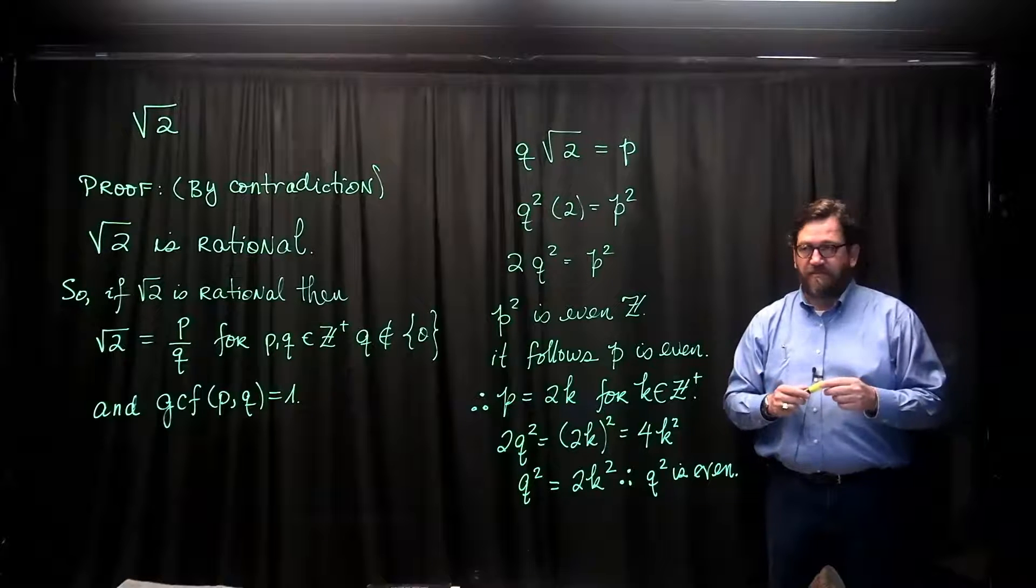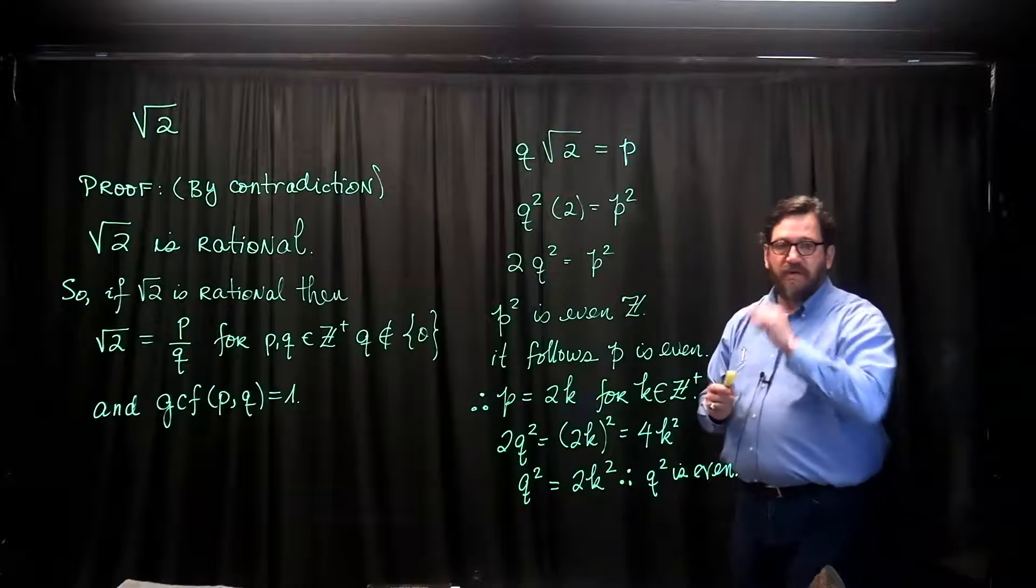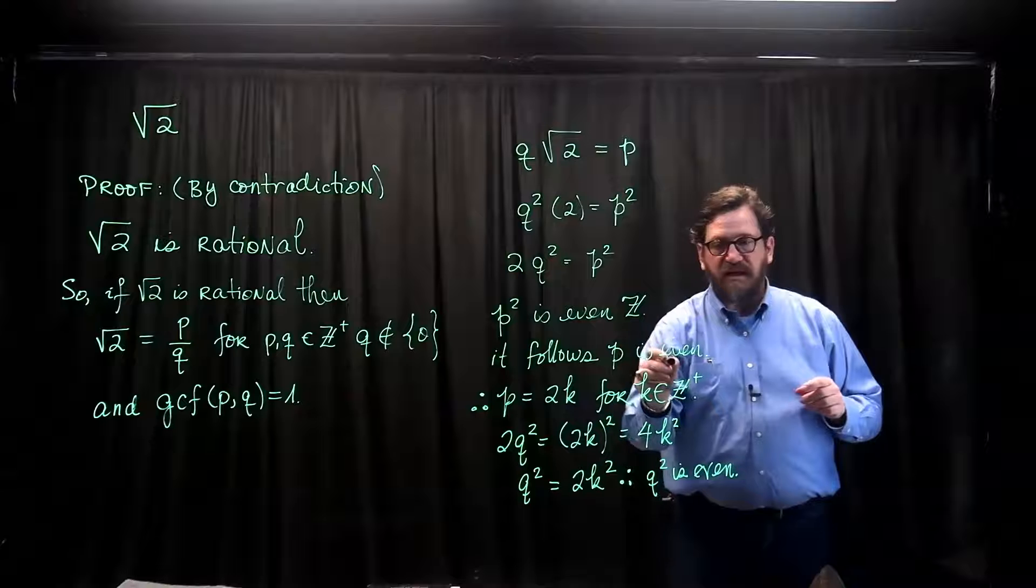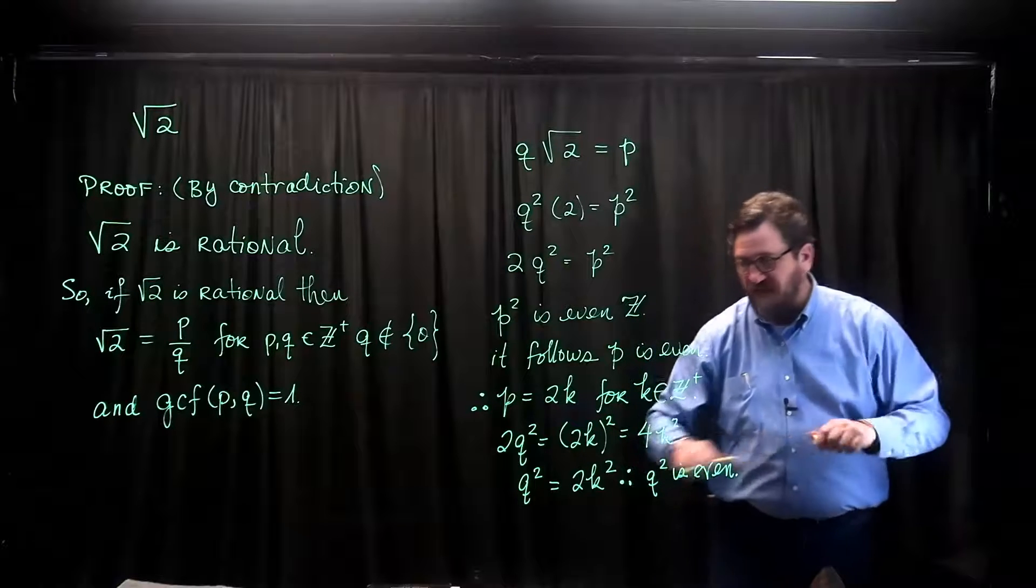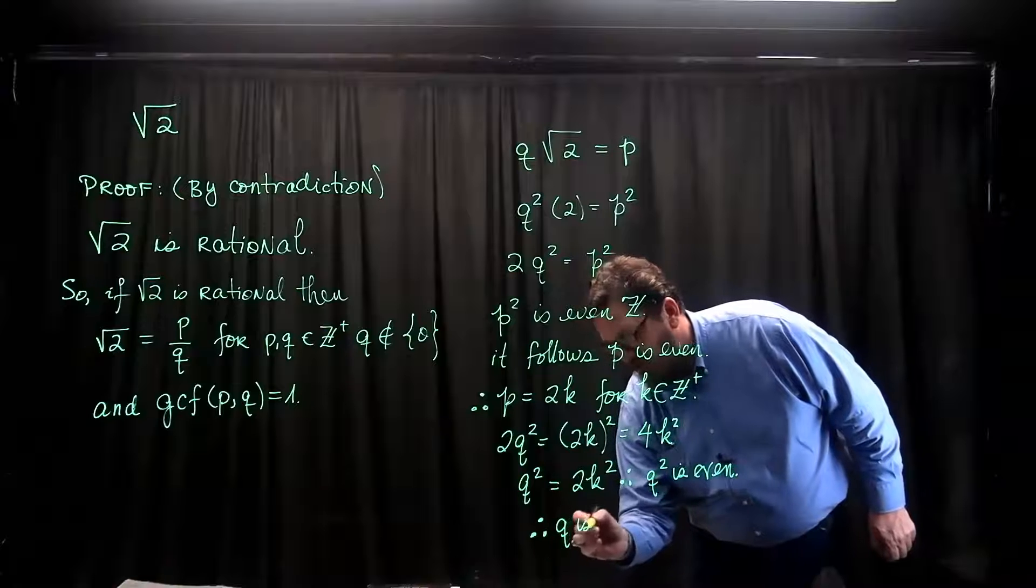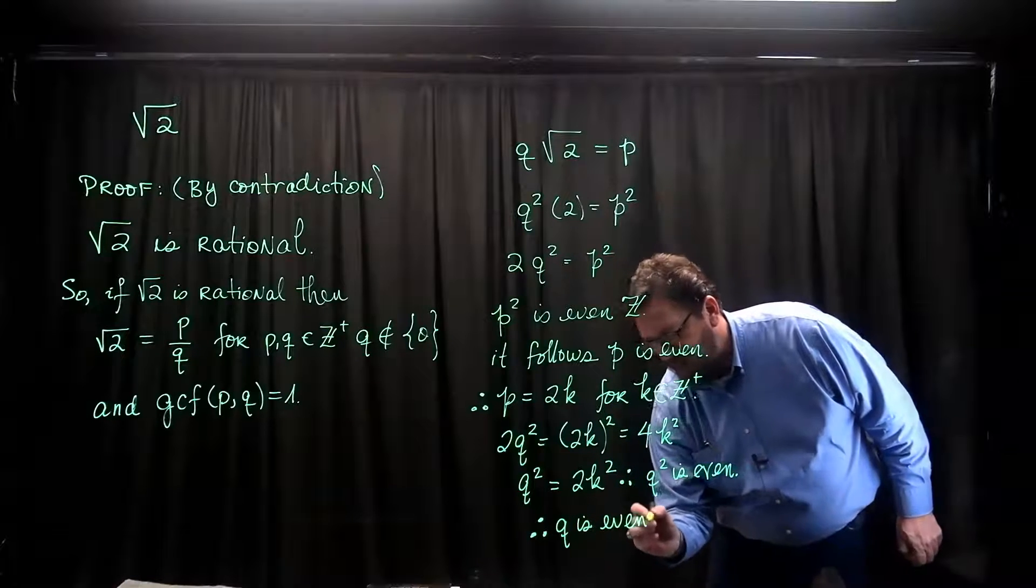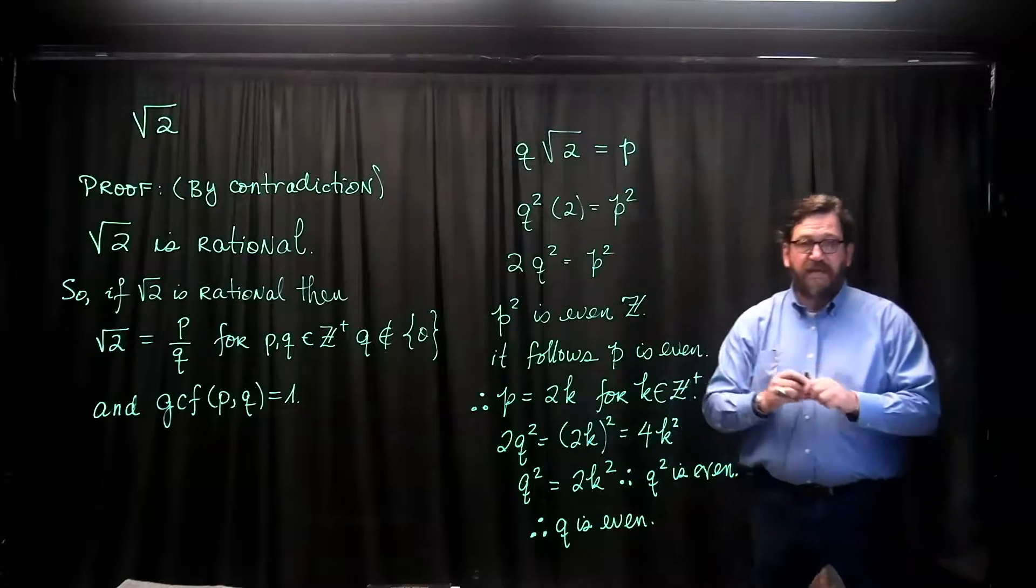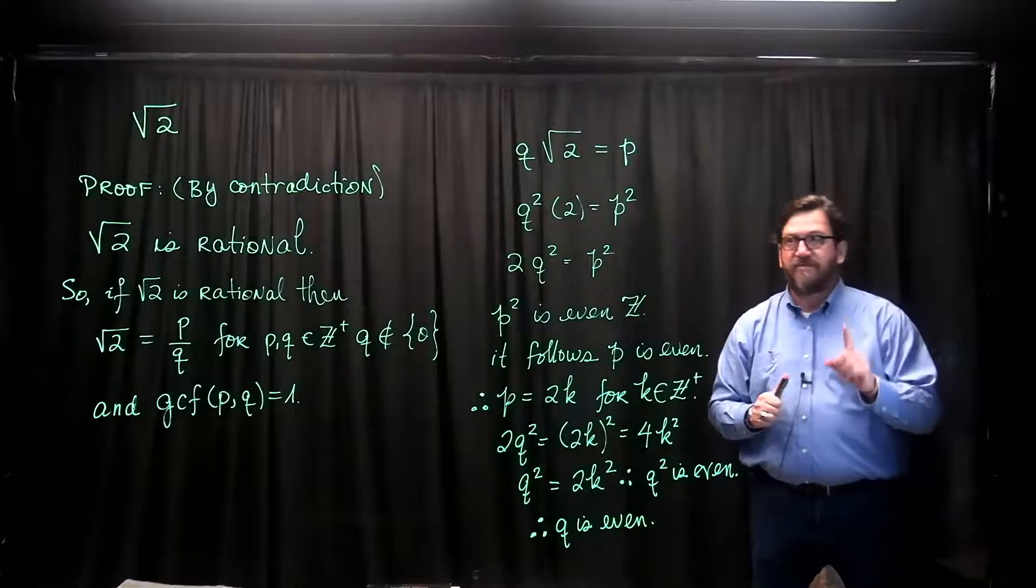But when you get back to me, this is what I'm going to tell you. p squared was even. That meant p was even. q squared is even. Therefore, q is even, which meant that both p and q contain factors of 2.